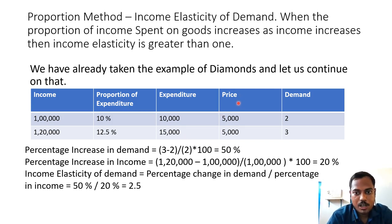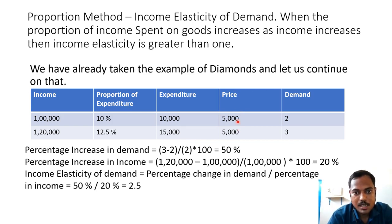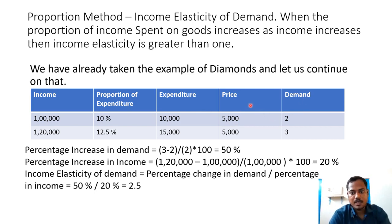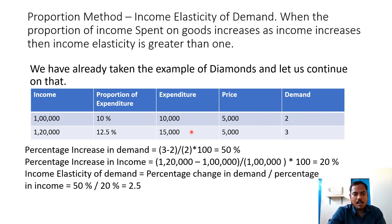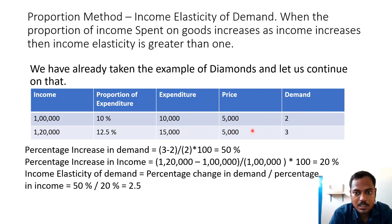Let us assume 1 unit of diamond equals Rs. 5,000, so price is Rs. 5,000. Expenditure divided by price gives demand for diamonds. In the first case, 10,000 ÷ 5,000 gives a demand of 2 units. When the expenditure is 15,000, then 15,000 ÷ 5,000 gives us a demand of 3 units.